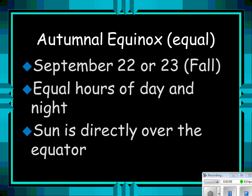The autumnal equinox — again equinox, equal, equator — happens around September 22nd or 23rd. It starts the season of fall. We get equal hours of day and night and the Sun is directly over the equator.